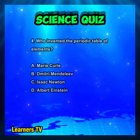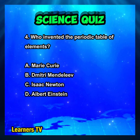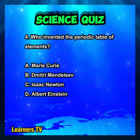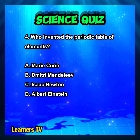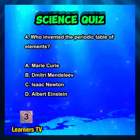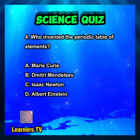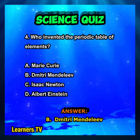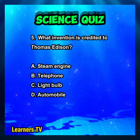The answer is B. X-rays. Who invented the periodic table of elements? A. Marie Curie. B. Dmitry Mendeleev. C. Isaac Newton. D. Albert Einstein. The answer is B. Dmitry Mendeleev.